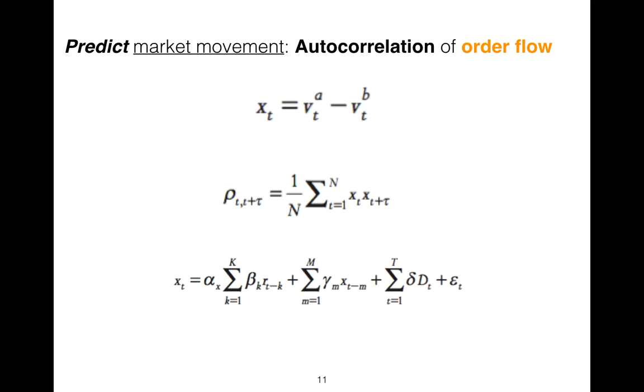We have autocorrelation, and then we have a more complex regression. As you see, there are some variables: r is one-trade returns; D(t) is the dummy indicator. It is the function that we use in financial engineering.